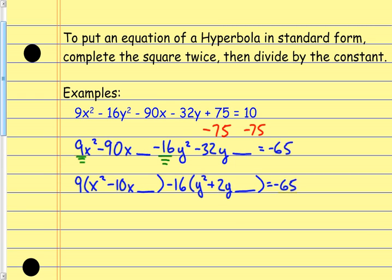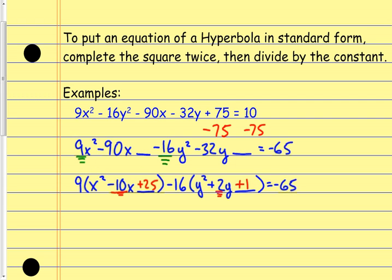Now I can complete the square inside each set of parentheses. For the first one, I take the b value, divide by 2, and square it — that gives me plus 25. For the second one, I take b, divide by 2, and square it — that gives me plus 1. Whatever I do to one side I have to do to the other. Notice I added 25 inside the first parentheses, but because the 9 gets distributed, what I really added to the whole side is 9 × 25 = 225. So I add 225 to the other side.